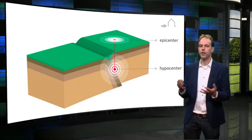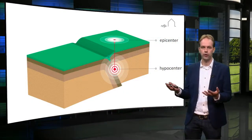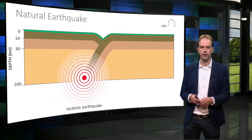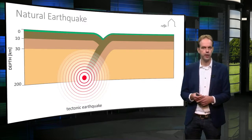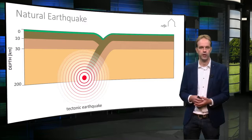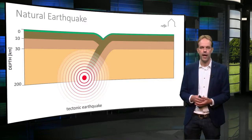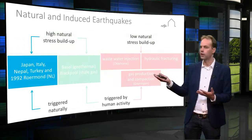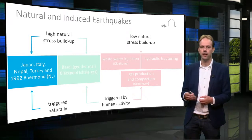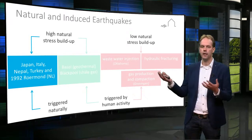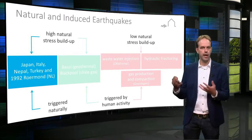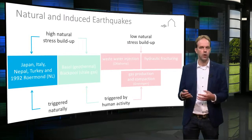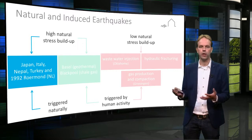The majority of earthquakes on earth are natural earthquakes generated by high stress build-up due to tectonic processes. Examples of tectonic earthquakes are the earthquakes in Japan, Turkey, Italy, Nepal, or the 1992 earthquake in Roermond in the Netherlands.